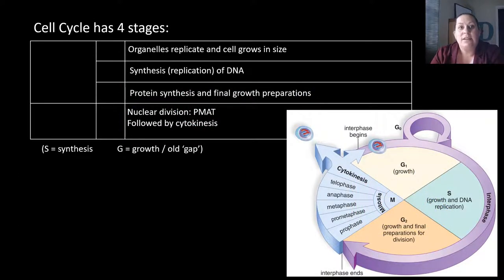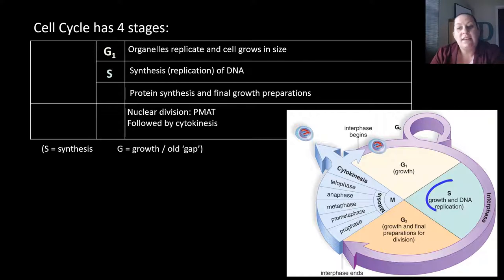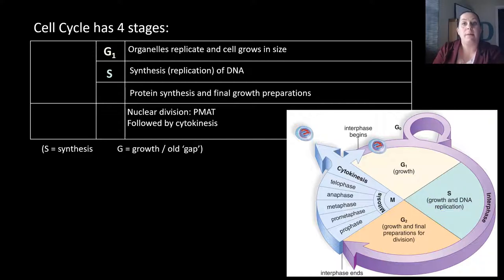This process is known as the cell cycle, which takes place in four main stages. There's the G1 stage — growth — where organelles replicate and the cell grows in size. Sometimes the G phase is known as the gap phase. This is followed by the S phase, or synthesis phase, where DNA is synthesized or replicated. We need to make sure each new cell has the same amount of DNA, so for humans our cells need 46 chromosomes.